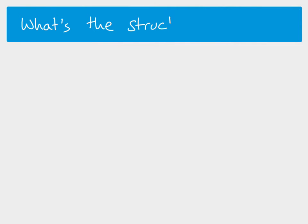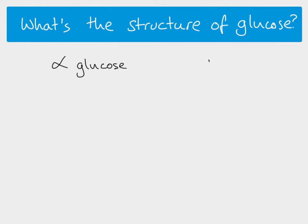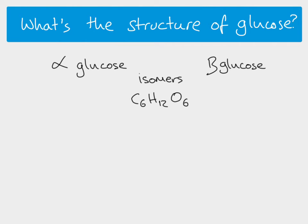Let's think about the structure of glucose. We know the molecular formula; we now need to think about the structural formula. Very importantly, there are two different kinds of glucose: alpha glucose and beta glucose — please note beta is not just a capital B, it comes down underneath. These two types of glucose are called isomers — they have the same molecular formula, C₆H₁₂O₆, but a different structure.